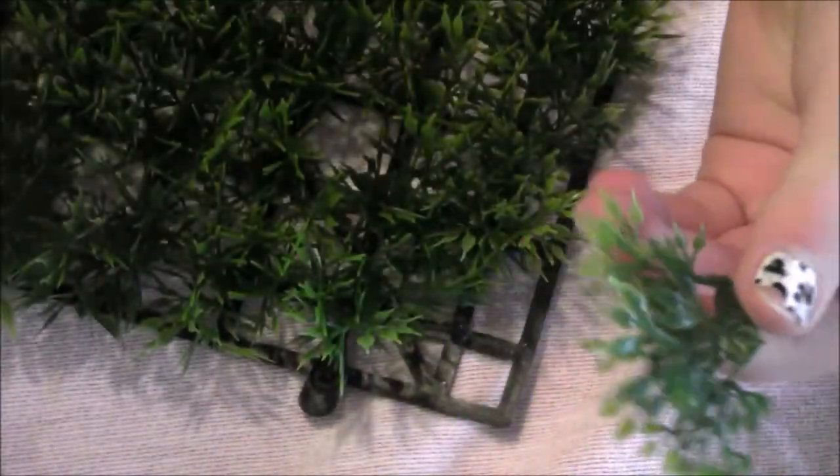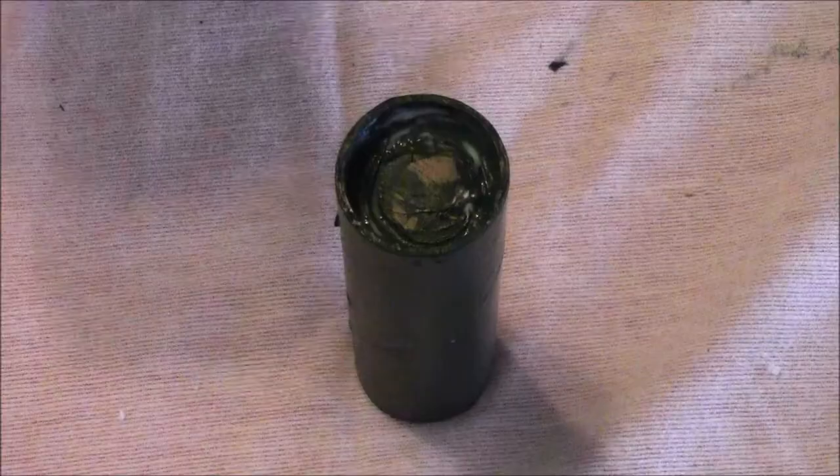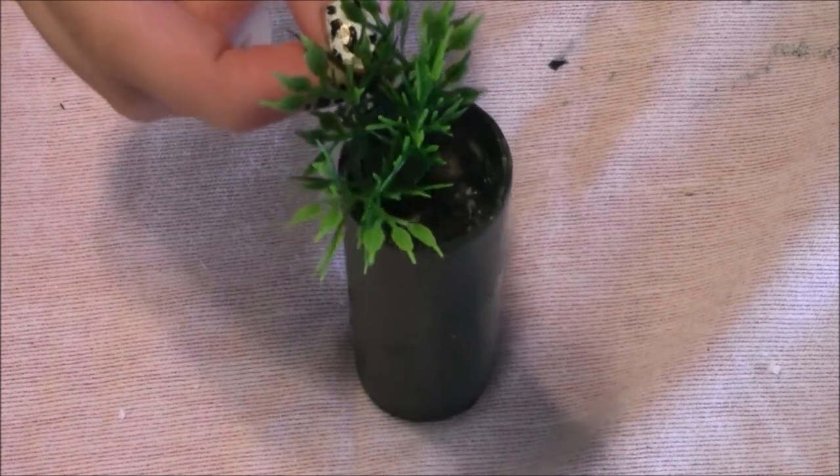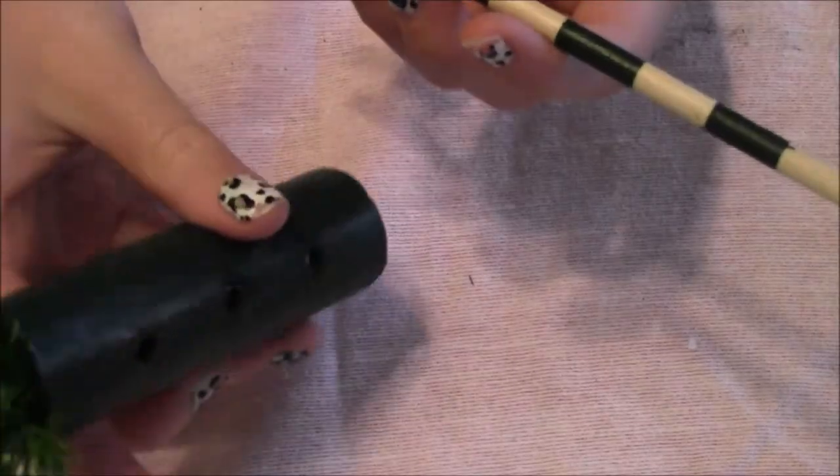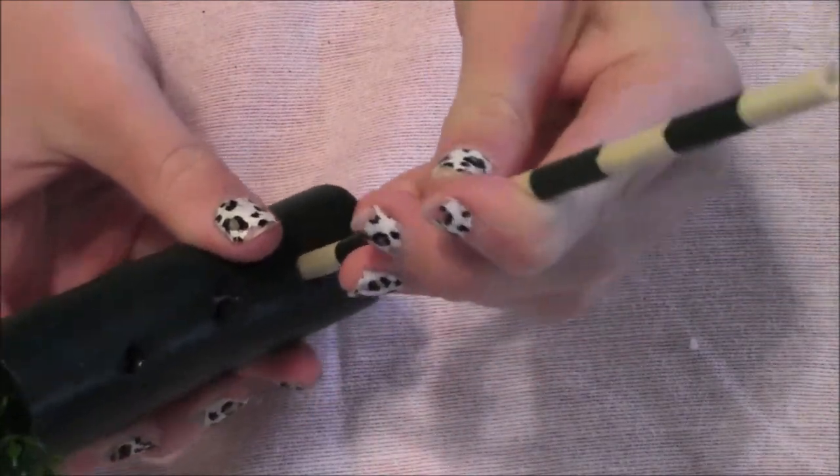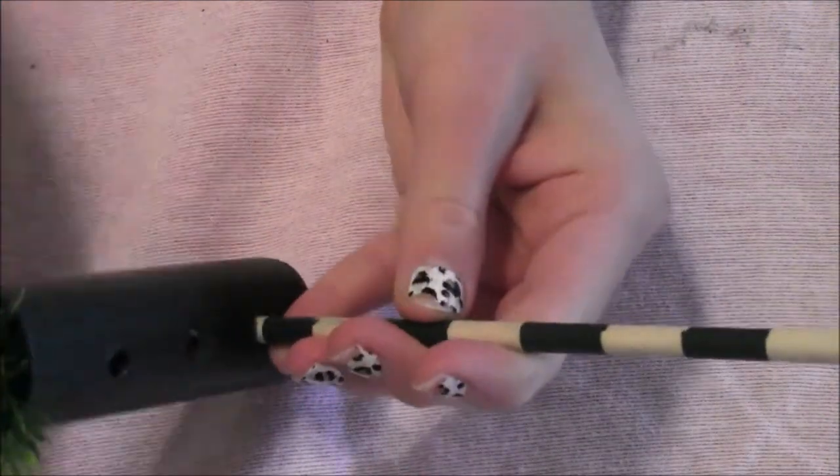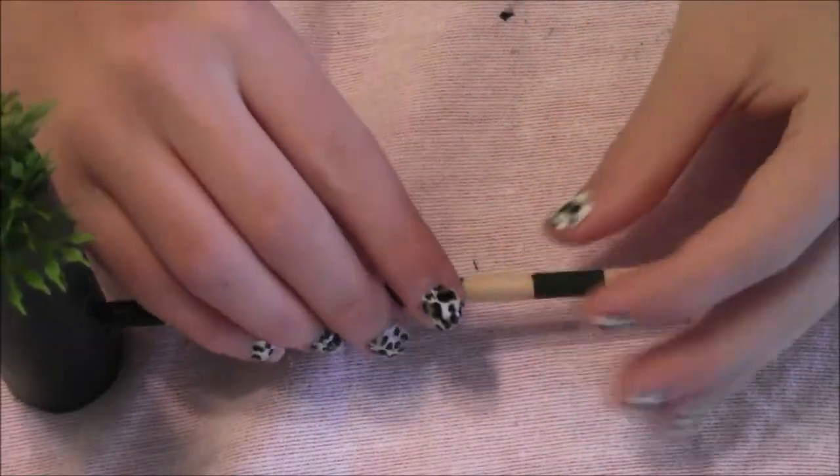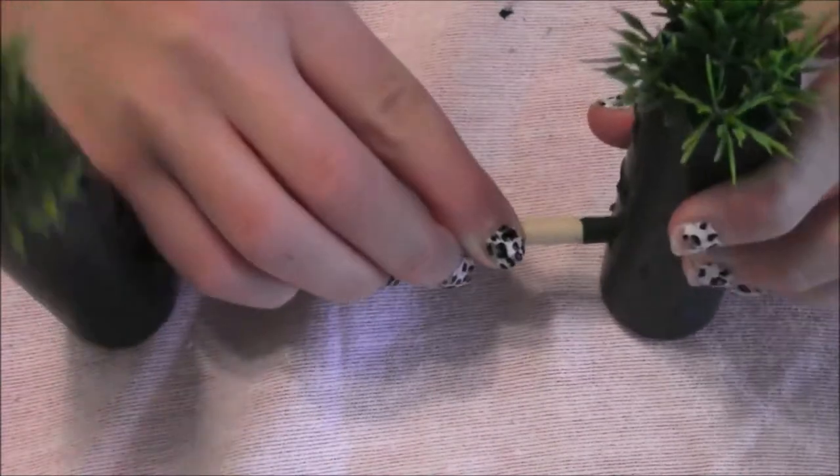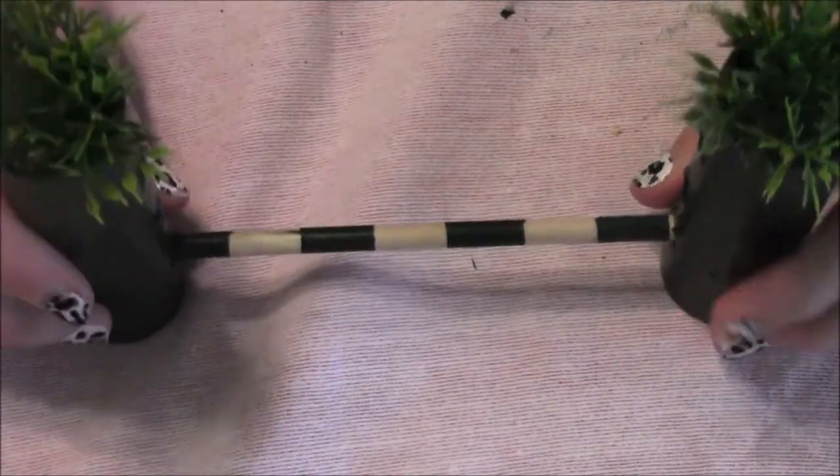Then for the top, I decided to glue on some fake plants at the top like you can see. Then when you're ready to put the jump together, you can just slide in the trot poles into the side of the jump. And I have three, so you can be three poles high.